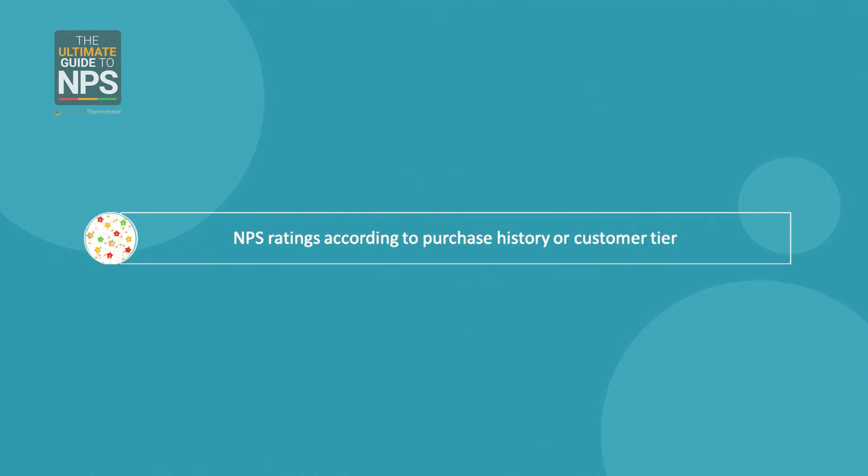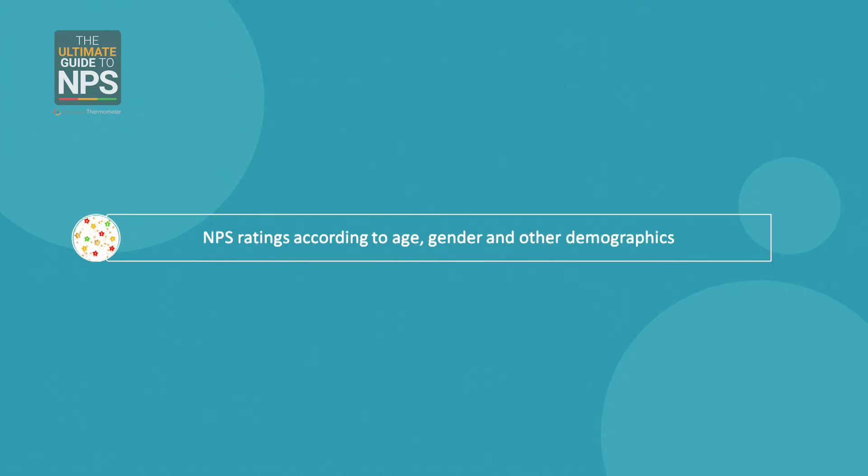Second, NPS ratings according to purchase history or customer tier. Here you can show how customers' impressions of you differ according to the types of products or services they consumed. If you have customer tiers like gold, silver and bronze for different service levels, you can correlate that too — the same could apply to correlations against revenue spent. Third, NPS ratings according to age, gender and other demographics. This answers the question: what types of customers like us the most? It's great for tallying against your target customer personas for sales activity and for mapping out opportunities in your addressable market. These insights could be influential in how you target marketing, promotions and communications in general.